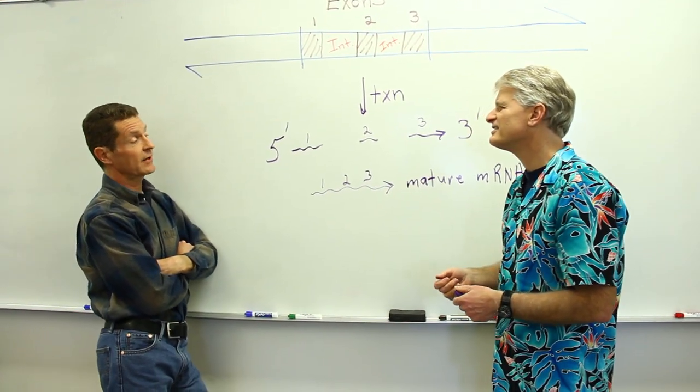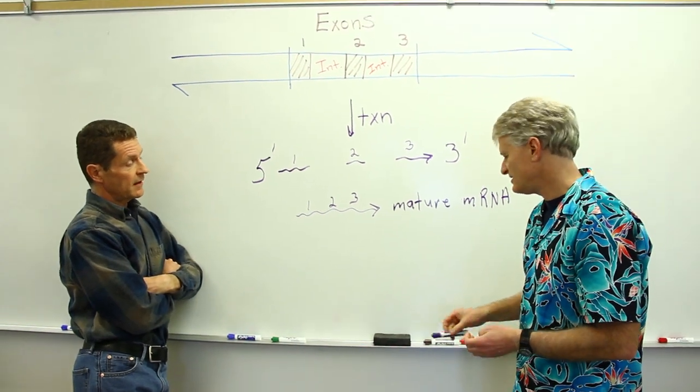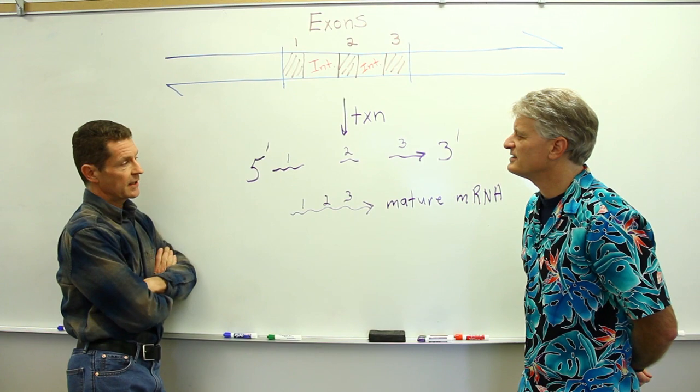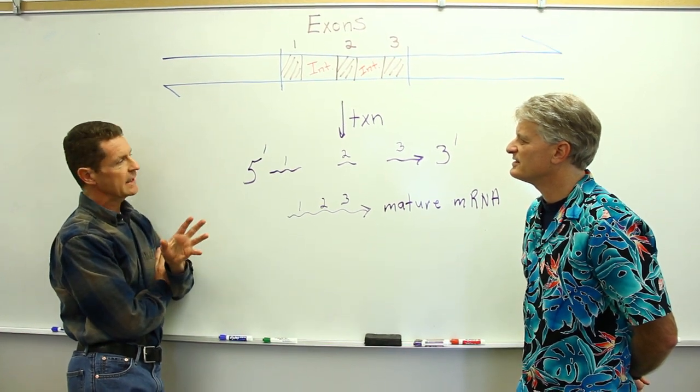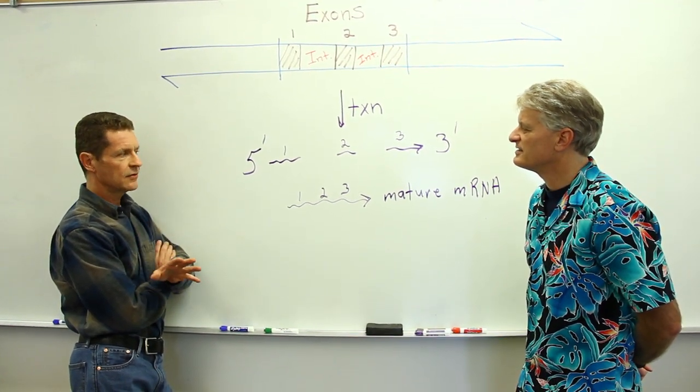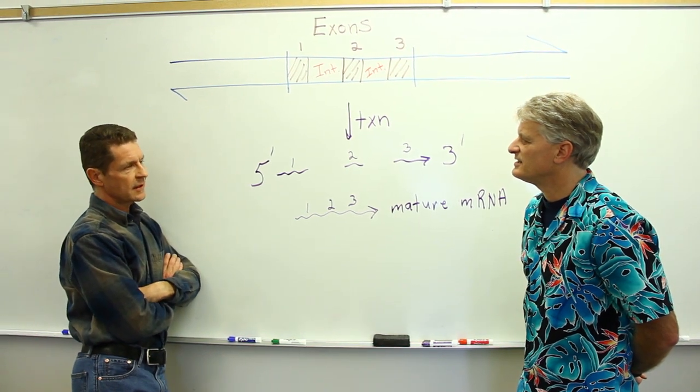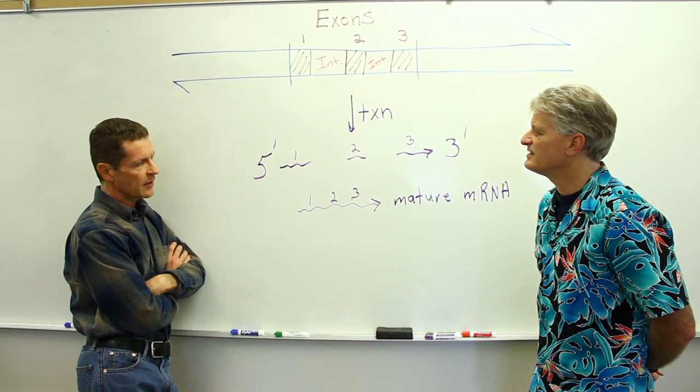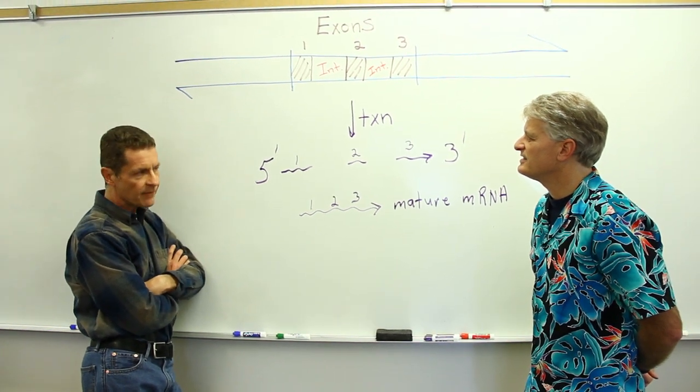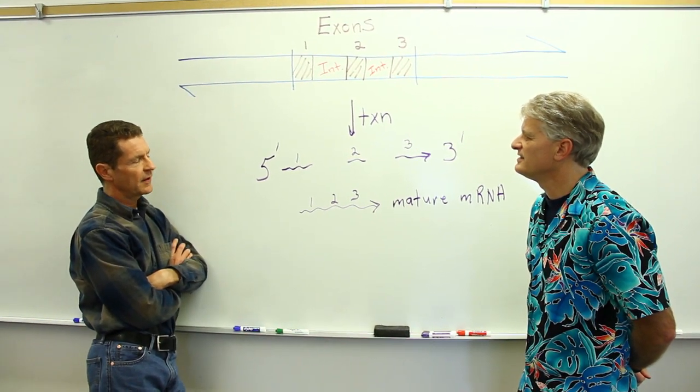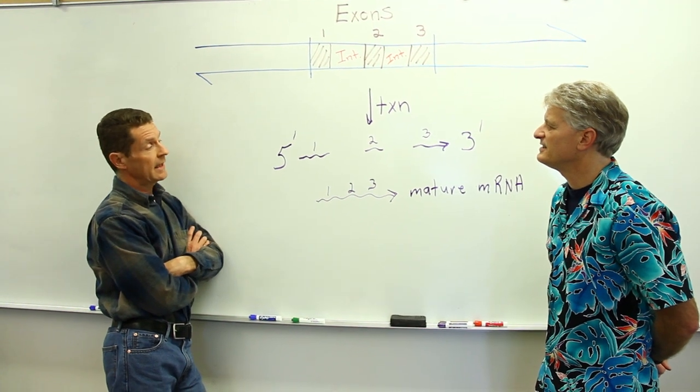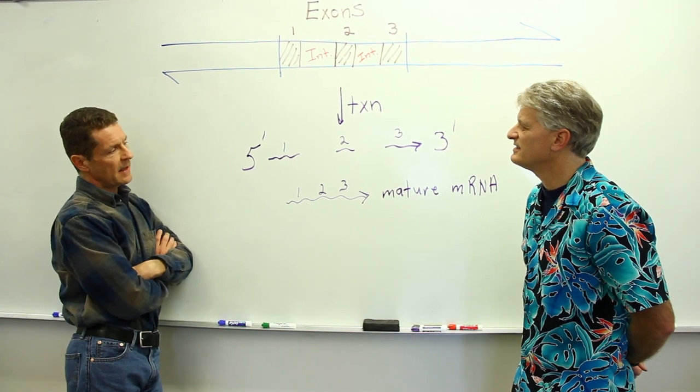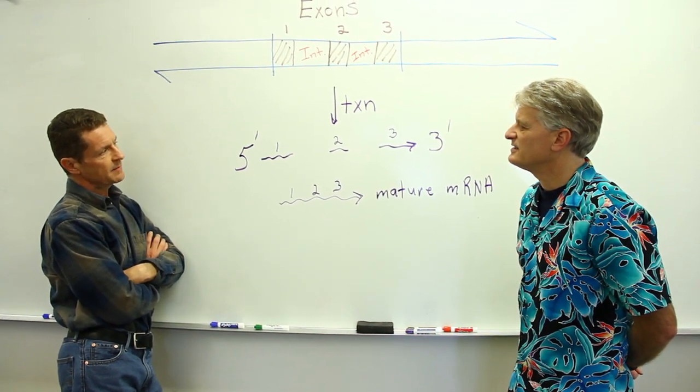That's a great question. Well, just to start with eukaryotes, there's a huge amount of variation. Some eukaryotes have hardly any, and some have a lot. Humans have a lot. But if you look at the level of prokaryote, eukaryote, prokaryotes, bacteria, have them, but they're very rare and quite different in their makeup.